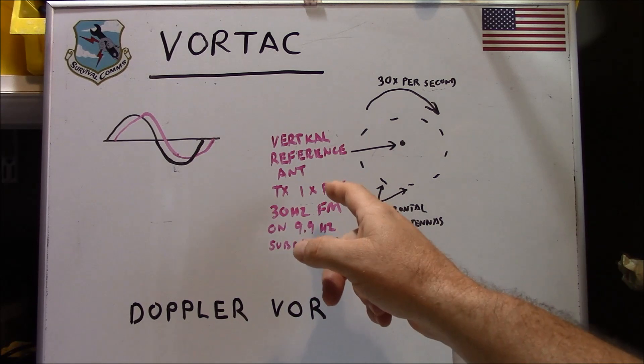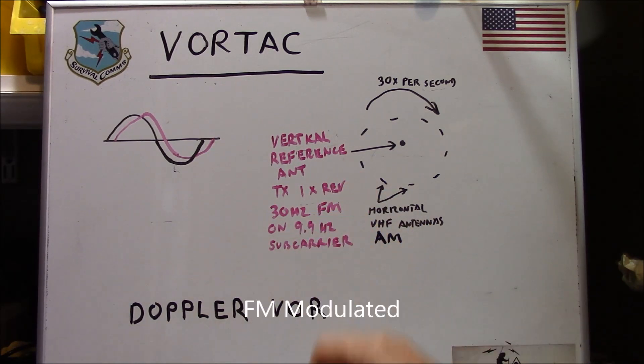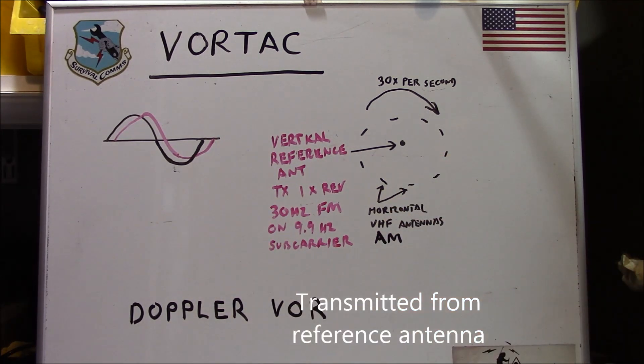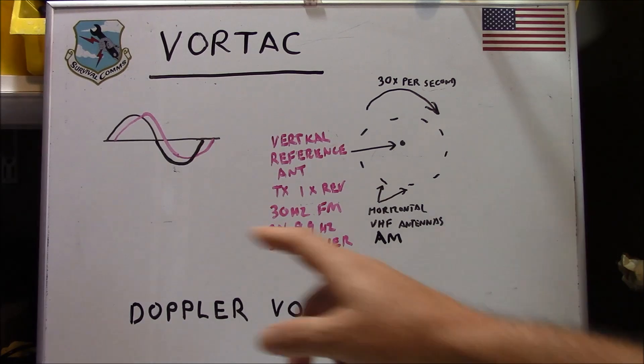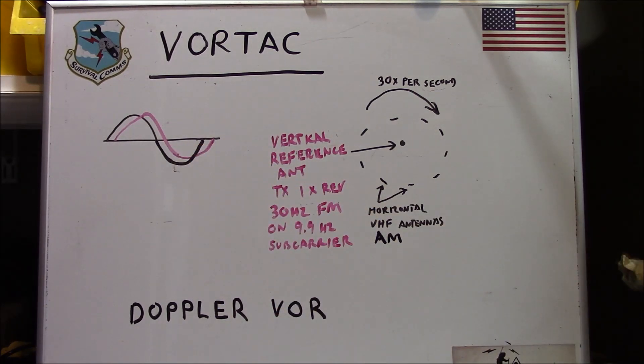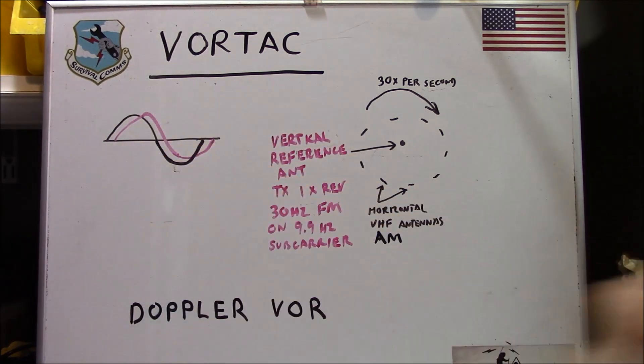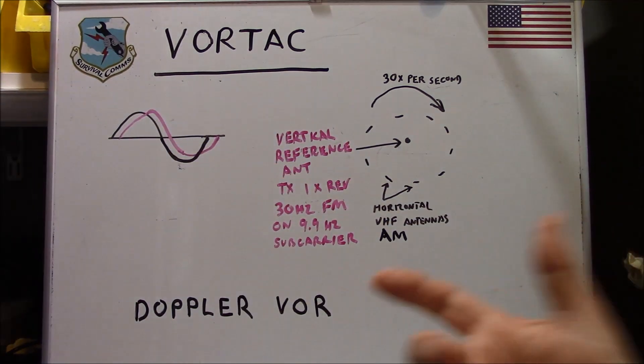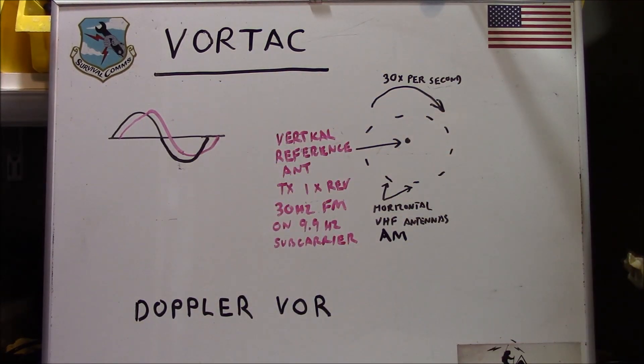Now, once per revolution we have a 30 Hz FM signal that's modulated from the vertical reference antenna on a 9.9 Hz subcarrier. The way we determine what bearing it is is based upon that relationship and phase and amplitude and the differences such. Again, that's very much the cliff notes example of what's going on here. And there is a lot of really good content out there on YouTube that explains this in much greater detail than I can provide here.